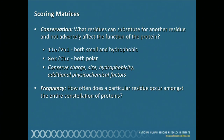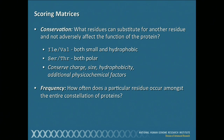In putting these matrices together, there are two major things to think about. First, conservation: what residues can substitute for another residue and not adversely affect the function of the protein? Empirically, things like isoleucine and valine are both small and hydrophobic — they can often substitute for one another. Same thing for serines and threonines; they're both polar. The game is to make sure that you're conserving charge, size, hydrophobicity, and other physicochemical factors. The other thing that comes into play is frequency: how often do we see a particular amino acid occur across all proteins, taking into account rare versus common.